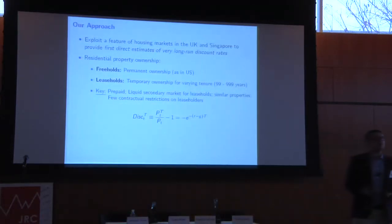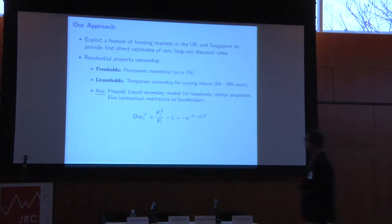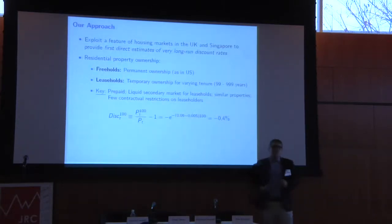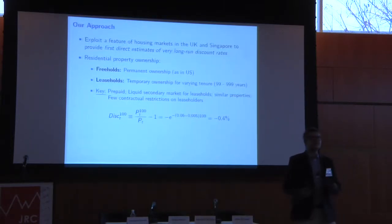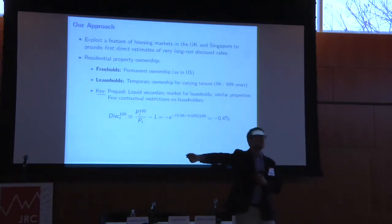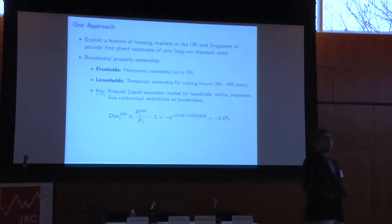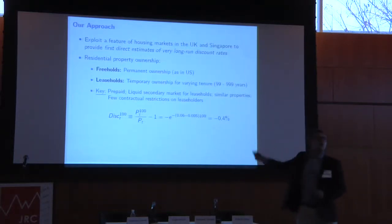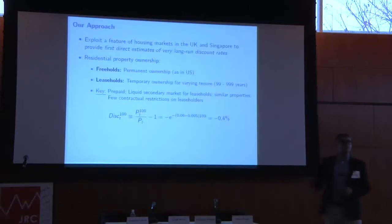If we plug in the estimated average real rate of return to housing of about 6 to 6.5% and estimated rent growth of about 0.5%, this suggests that a 100-year leasehold should trade at about a 0.4% discount to the freehold. This is the same intuition used when discounting climate change damages 100 years out at 6%: if you do 0.94 to the 100th power, it basically has no present value today. All the value of owning the property should come from rent over the first 100 years.